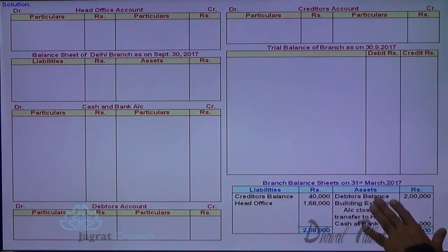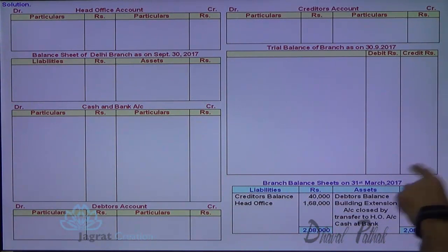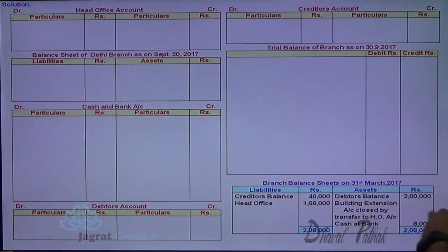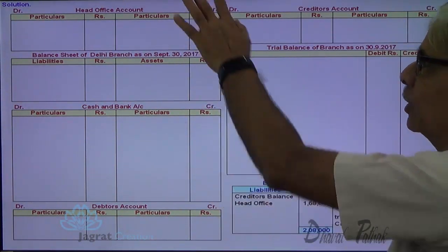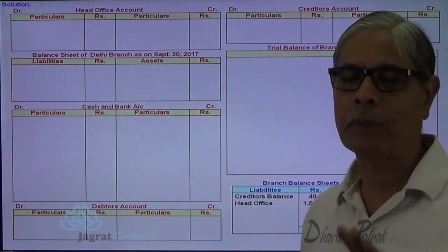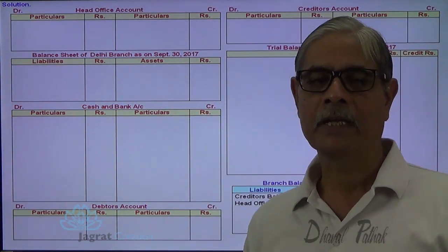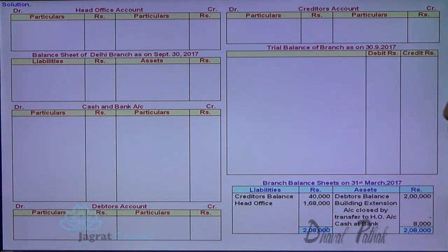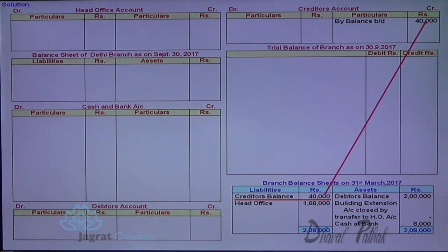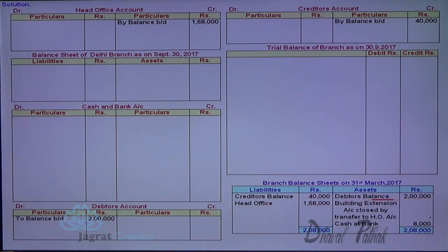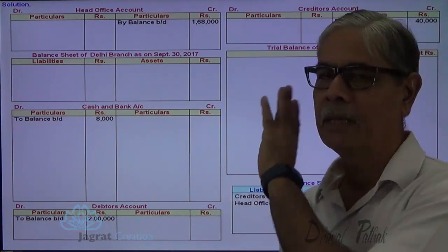This is the trial balance of the branch that I am going to prepare after six months, and here is the balance sheet. I have prepared the creditors account, head office account, debtors account, building extension, and cash and bank account. As I am asked to prepare the balance sheet, I will prepare that at the end. Let me first write down the opening balances. The opening balance of creditors is a credit balance; head office has a credit balance; debtors have a debit balance; cash and bank have a debit balance. Opening balances are now recorded.